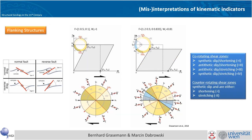Let's start with the most complicated structure — flanking structures. To make a very complex story a bit more simple, we reduce it here to four different types. In this left column, flanking structures are shown in red indicating a slip surface, blue indicates a central marker line, and in the left column we see an extensional offset of the central marker line.